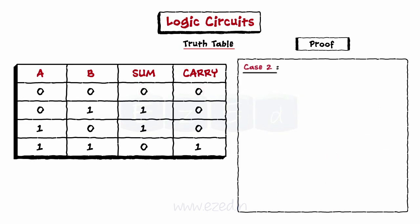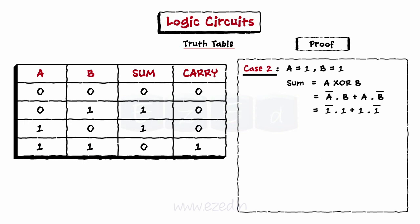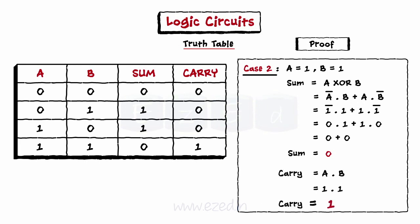Consider case 2 where A equals 1 and B equals 1. After putting these values of A and B into the equation for sum, we get sum equals 0. Similarly, putting these values in the equation for carry, we get carry equals 1, which again matches with the truth table.